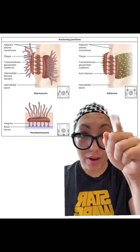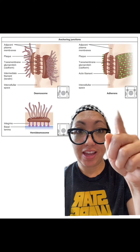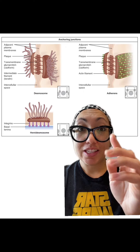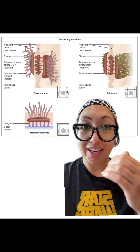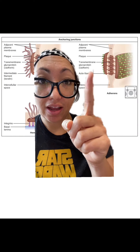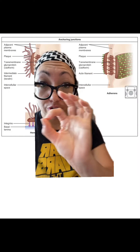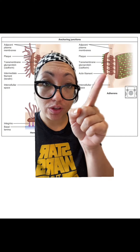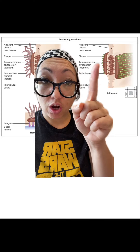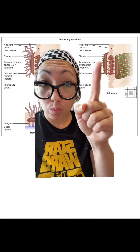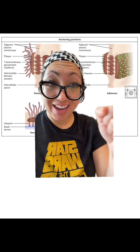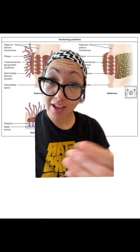And this part right here is the intercellular space — that is the space in between each cell. See these little transmembrane glycoproteins? These transmembrane proteins are going to go from the inside wall of one cell through the space and then anchor on the inside of the cell next to it.